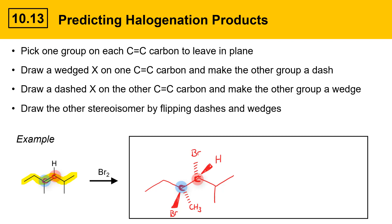Now, to draw the stereoisomer of that, all you need to do is copy the structure and flip the dashes and the wedges. This is going to be an enantiomer. And, that's the stereoisomer product. These are the two anti-addition products of bromination of this alkene.